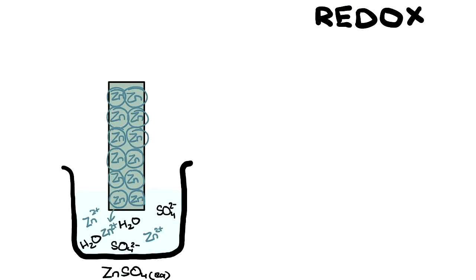However, if each zinc atom in the metal was able to lose two electrons to make it go into the solution, where would those two electrons go? How about this?